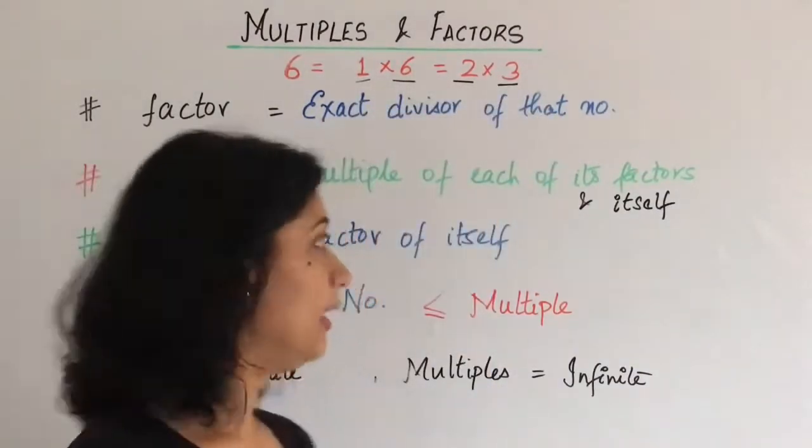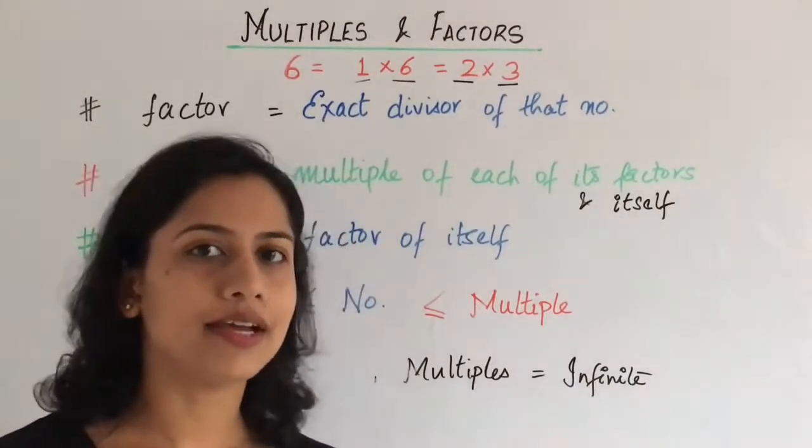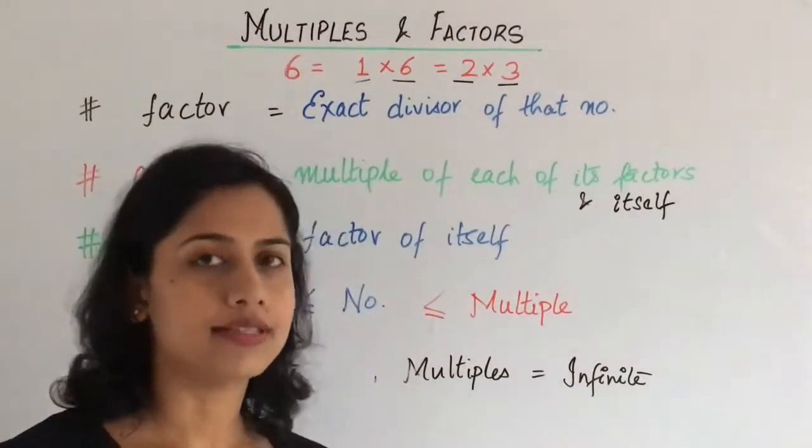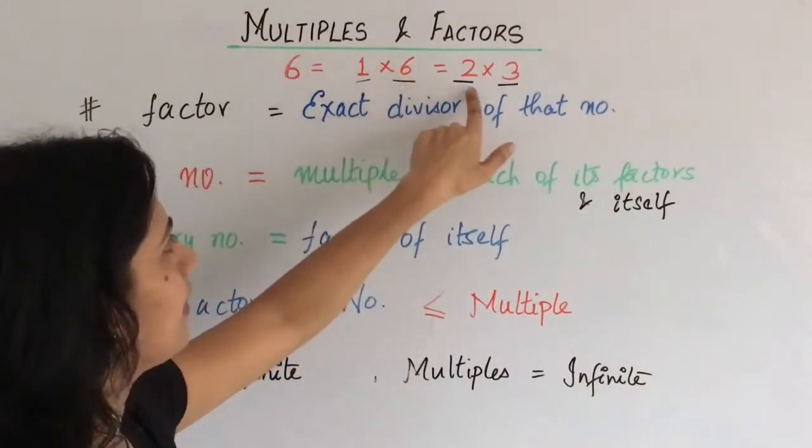Toh sabse pehli property kya hai? A factor is an exact divisor of that number. Yadhi hum koi ek factor lete hai, suppose hum yeh factor lete hai, yaha par 2.